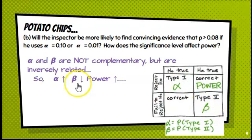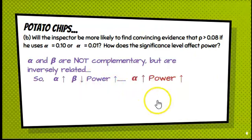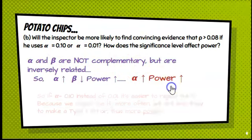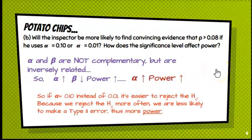So if alpha goes up, beta goes down, that means our power increases because if this number gets lower, this number gets higher. So here's the bottom line that you need to remember. If alpha goes up, power goes up. Greater area under the curve means I'm more likely to reject the null correctly. So if alpha is 10% instead of 1%, it's easier to reject the null. Because we'll reject the null more often, we are less likely to make a type 2 error. Therefore, there's more power involved.